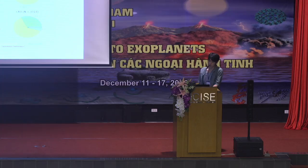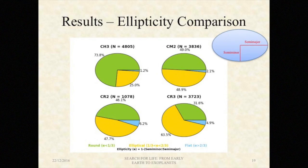In terms of shape, I've given three labels — round, elliptical, and flat — depending upon the value of ellipticity, which is defined as one minus the ratio of the two axes. For CH3, nearly three quarters of the whole population consists of round objects, whereas CR chondrites are dominated by a sum of elliptical and flat inclusions. Again, CM2 chondrite sits somewhere in the middle.